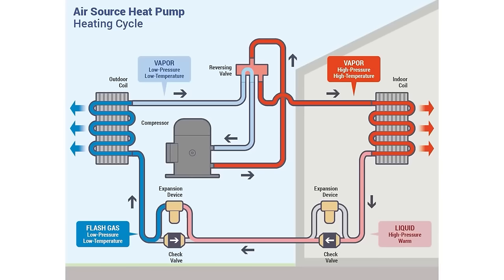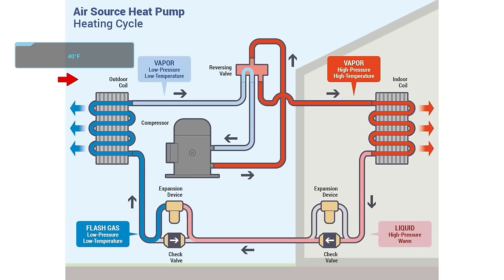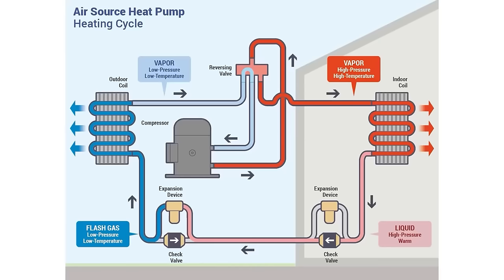In heat pump heat mode, your evaporator coil is outside and your condenser is inside. When it's 40 degrees outside, suction pressure is going to be much lower than in cooling mode — operating closer to how a refrigeration cooler works. That's going to increase compression ratio significantly. The colder it gets outside, the higher the compression ratios go because the lower the suction pressure goes, making the system less efficient and producing less capacity.